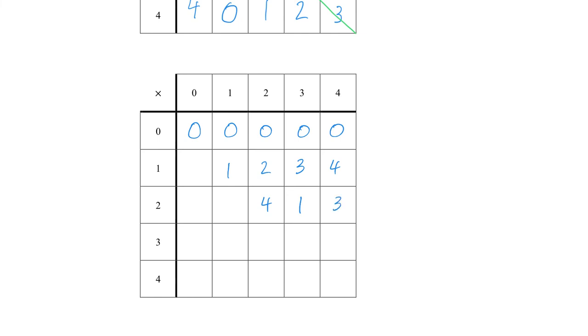3 times 3 is 9, which reduces to 4. 3 times 4 is 12, which reduces to 2. And then in the very last part of our table, 4 times 4 is 16, which reduces to 1.